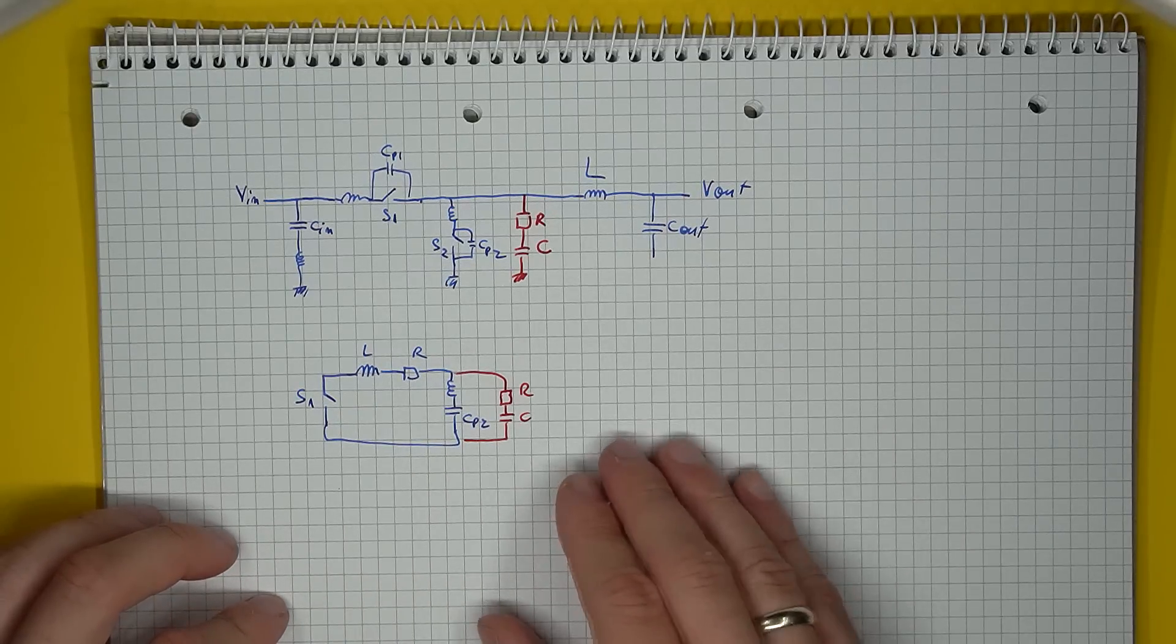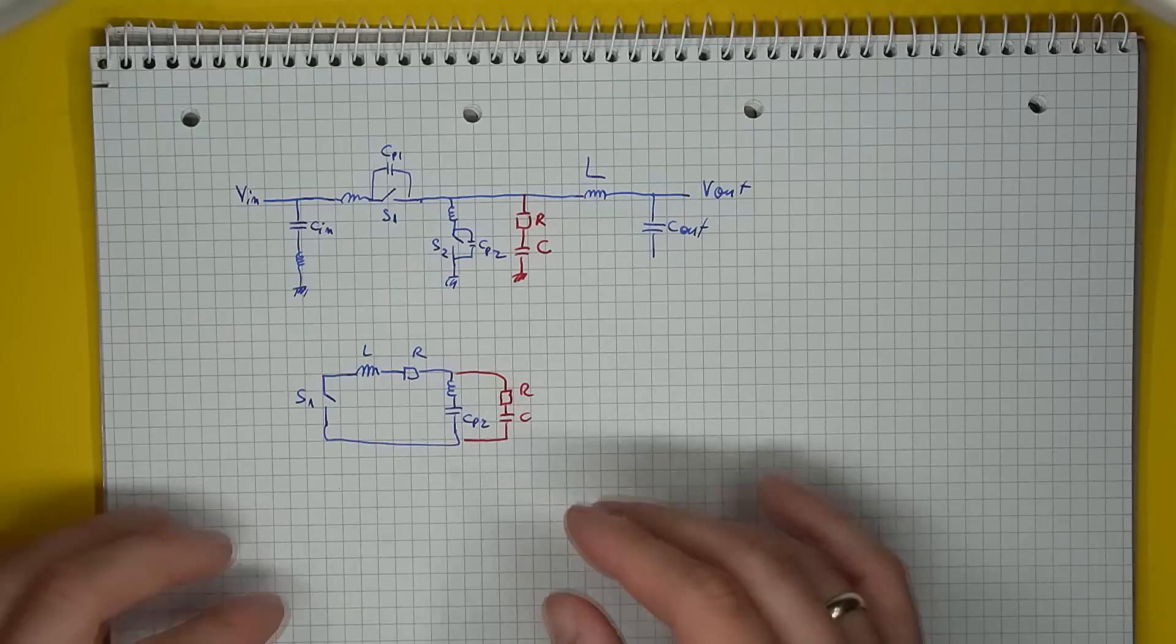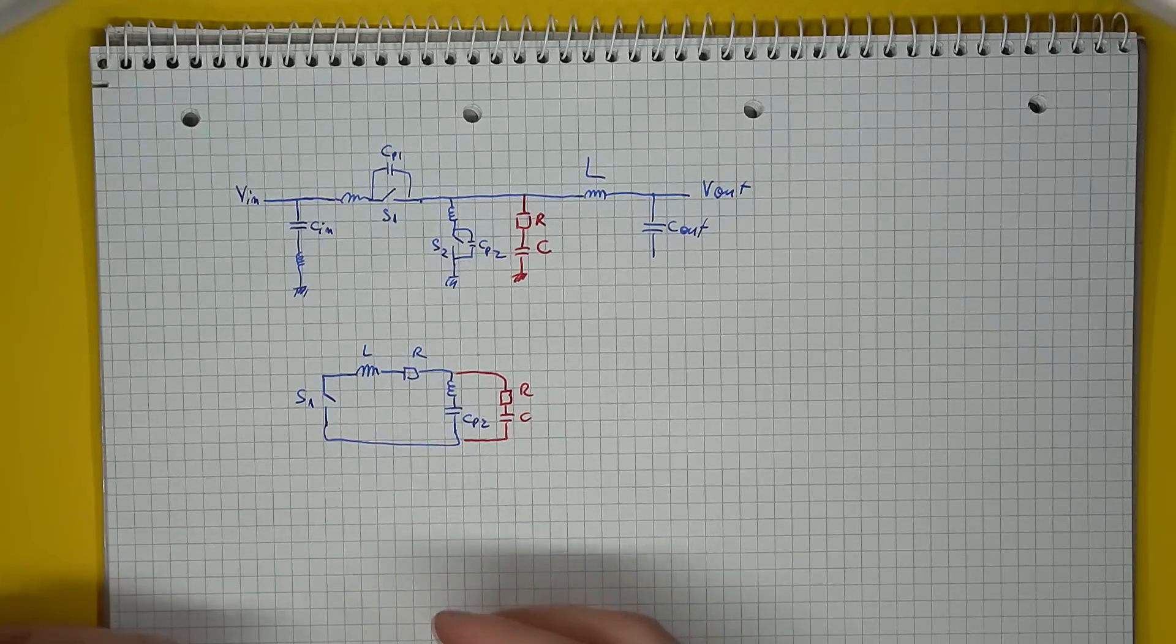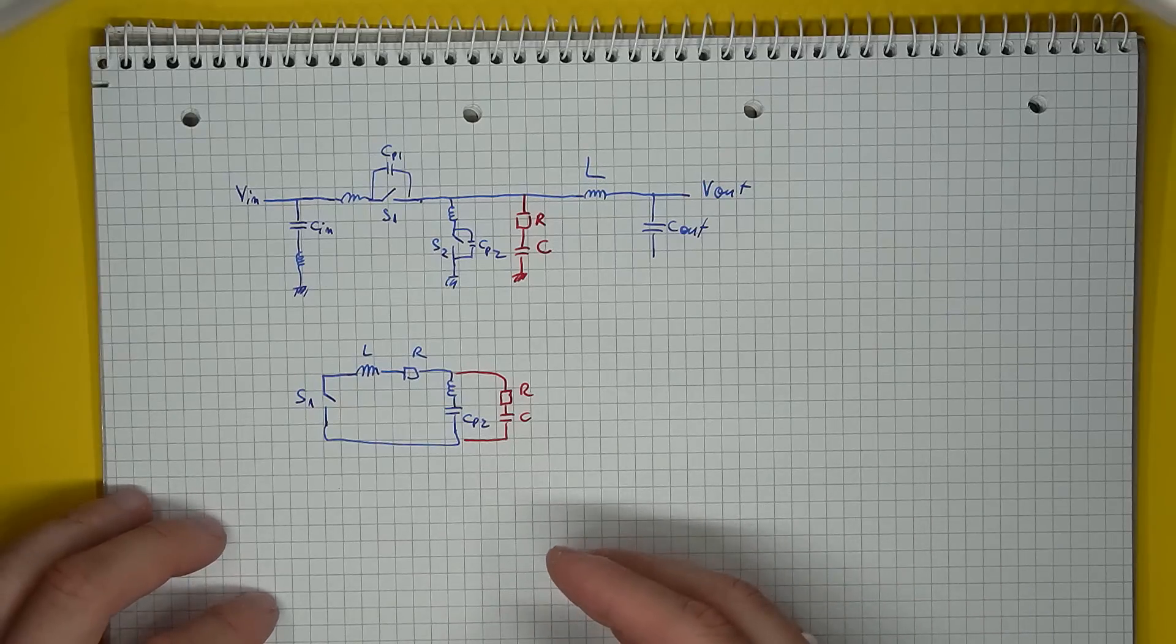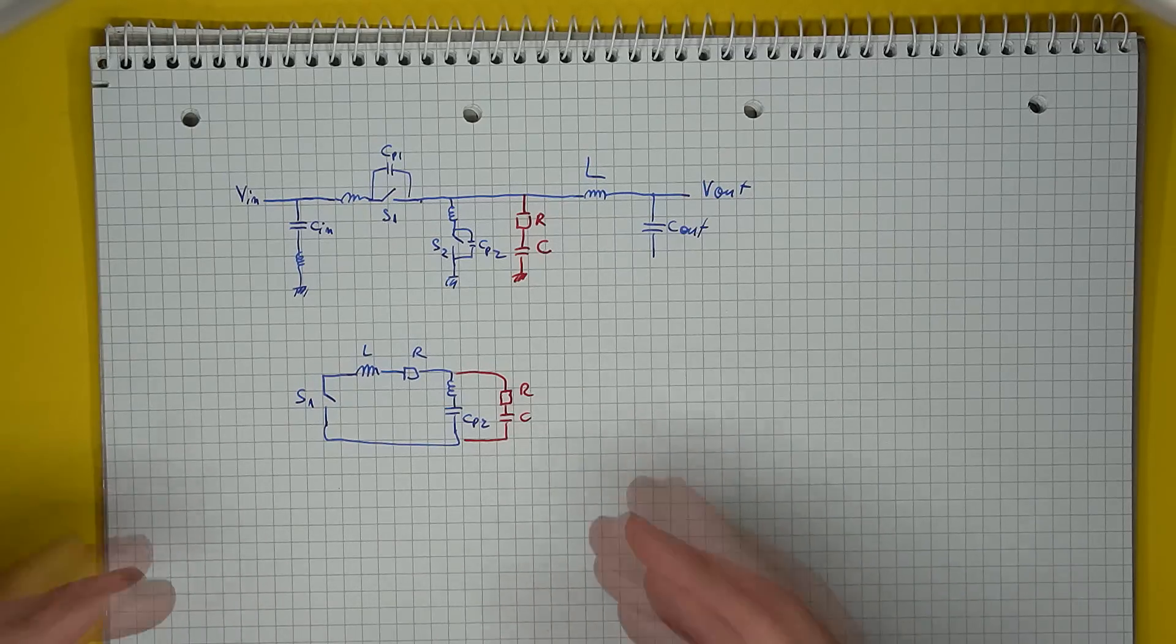But since this should only work at very high frequencies, at the ringing frequency, it should not affect the low frequency behavior of the power supply. Now this is only partly true of course, the snubber will add losses to the circuit.